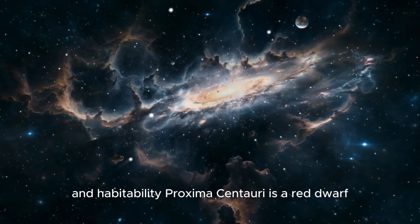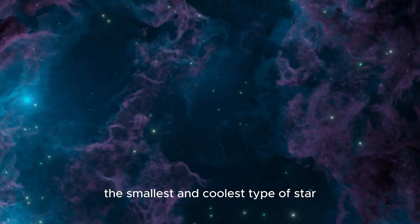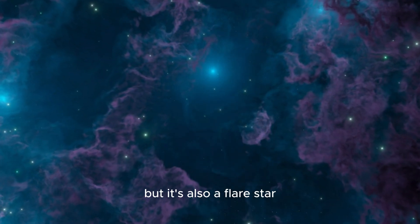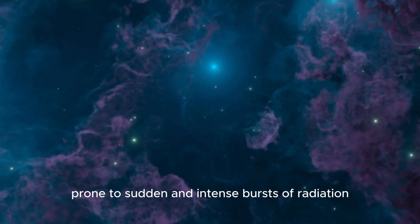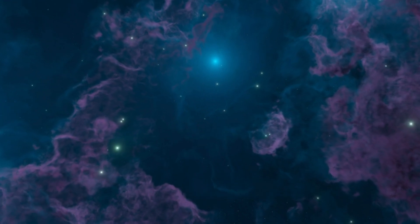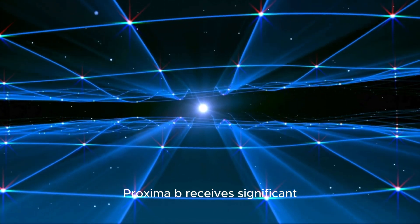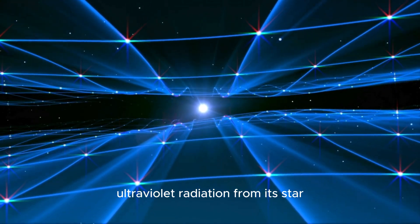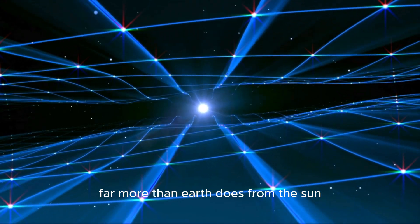Proxima Centauri is a red dwarf, the smallest and coolest type of star, but it's also a flare star, prone to sudden and intense bursts of radiation. Proxima b receives significant ultraviolet radiation from its star, far more than Earth does from the Sun.